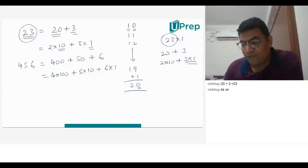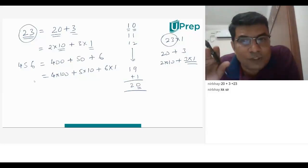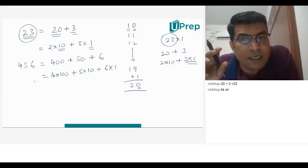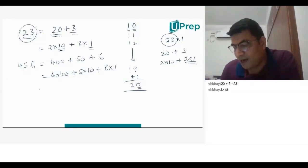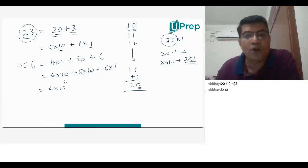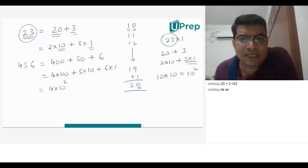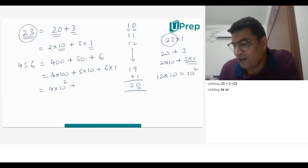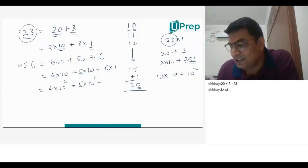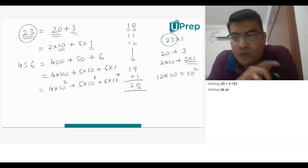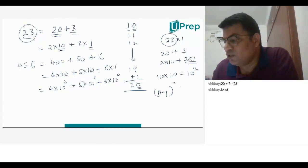Now, in a number like 456, we have 400, which I write as 4 into 100. And 100 can be written as 10 squared. What do you mean by 10 squared? 10 into 10. So, 4 into 10 squared plus 5 into 10 to the power of 1 plus 6 into 1. And 6 into 1 can also be written as 6 into 10 to the power of 0.